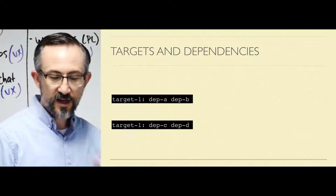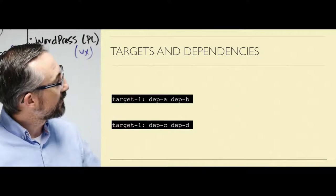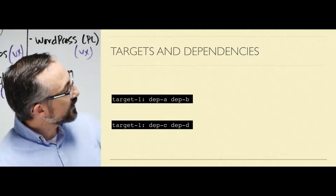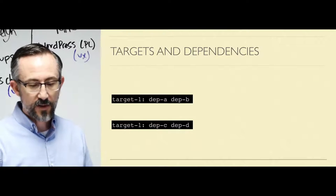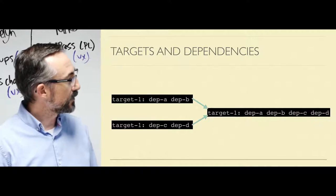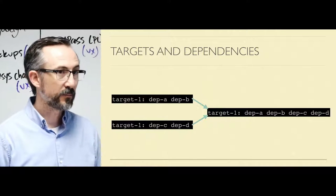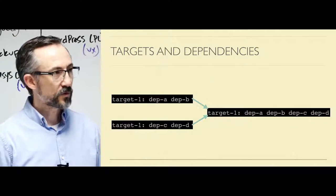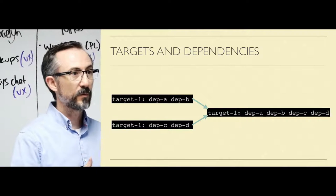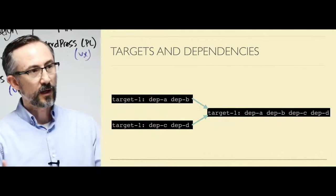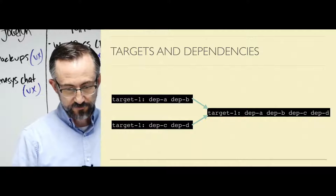The inverse is also true — you can have multiple rules for one target. If you have dependency A and B on one rule and C and D on another, Make compacts these into one rule with four dependencies. However, you may only have one recipe per target. If you try to have more than one, Make will probably execute the last one and warn you that you've got multiple recipes for this target. You better fix that.